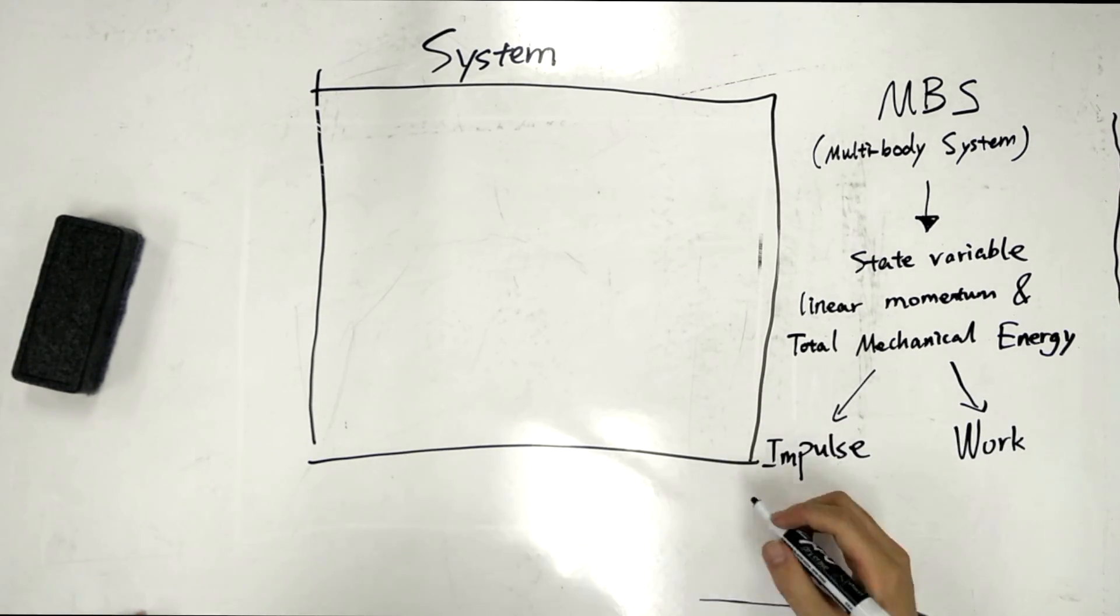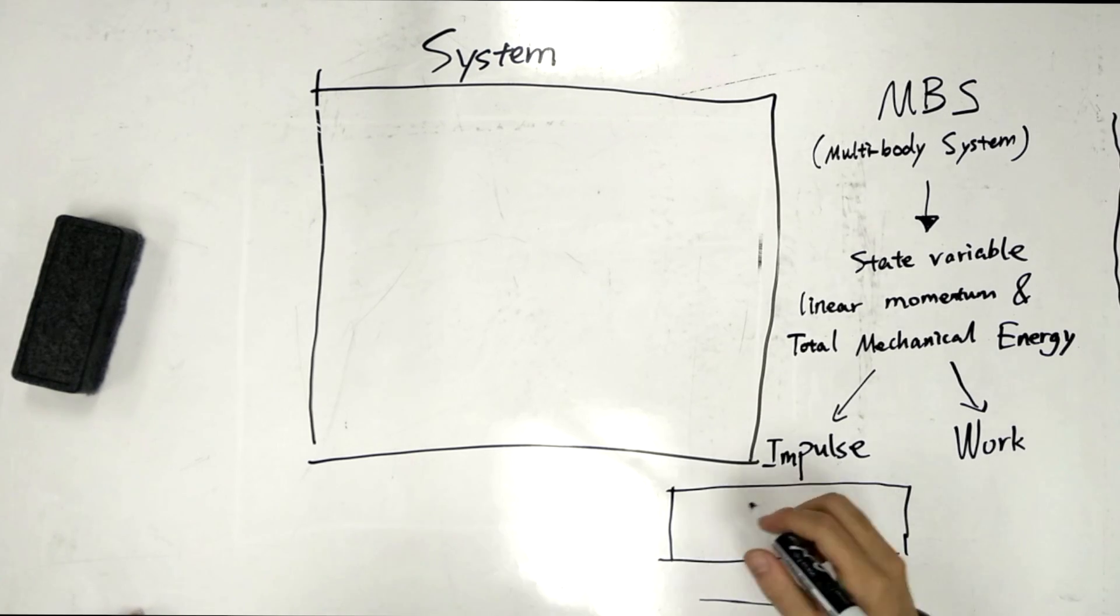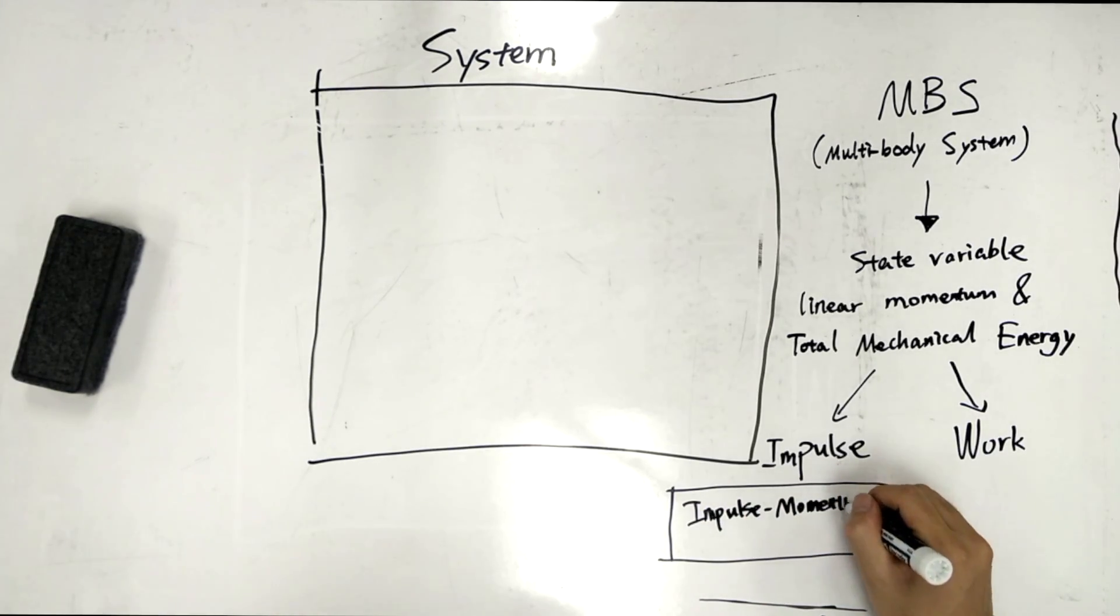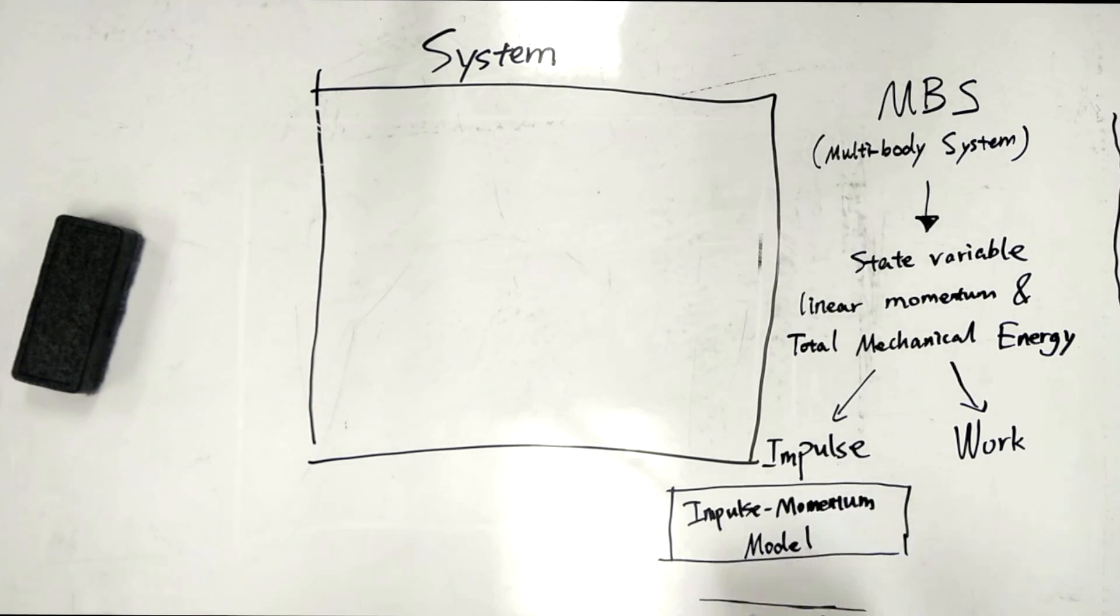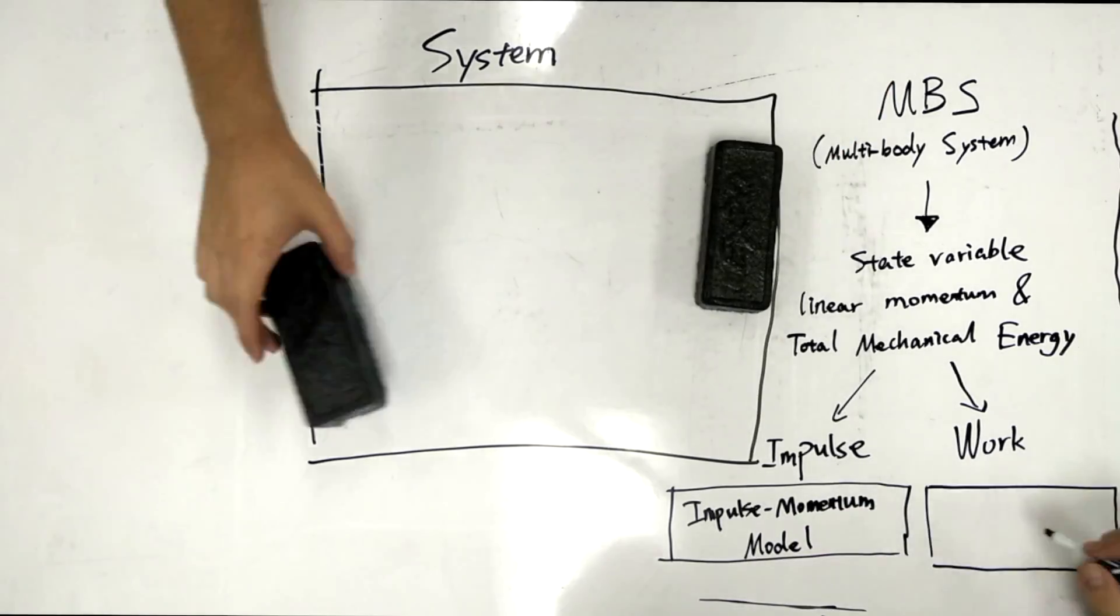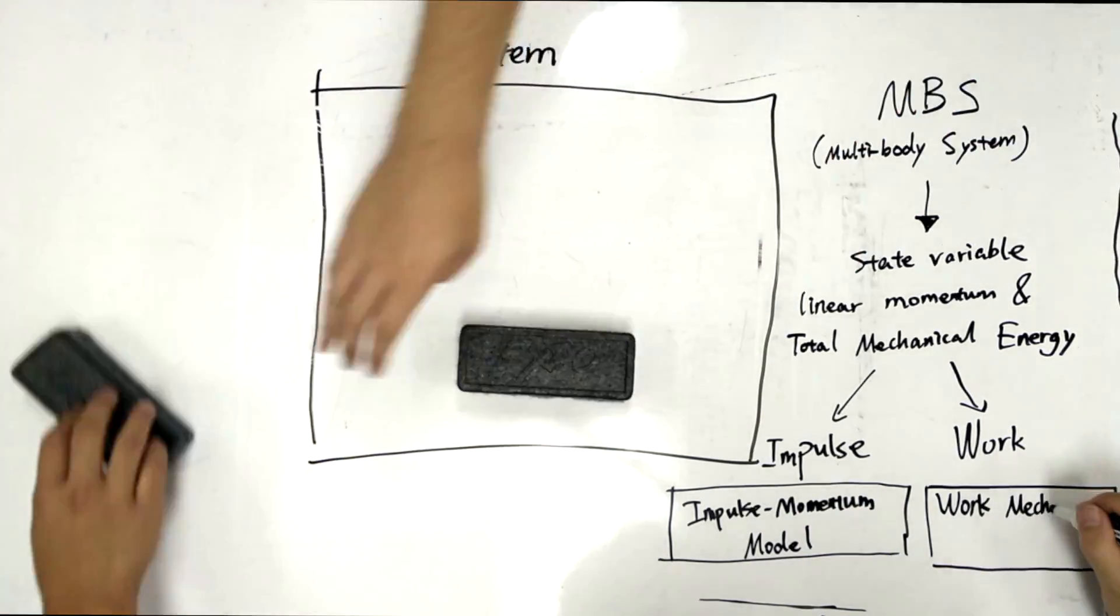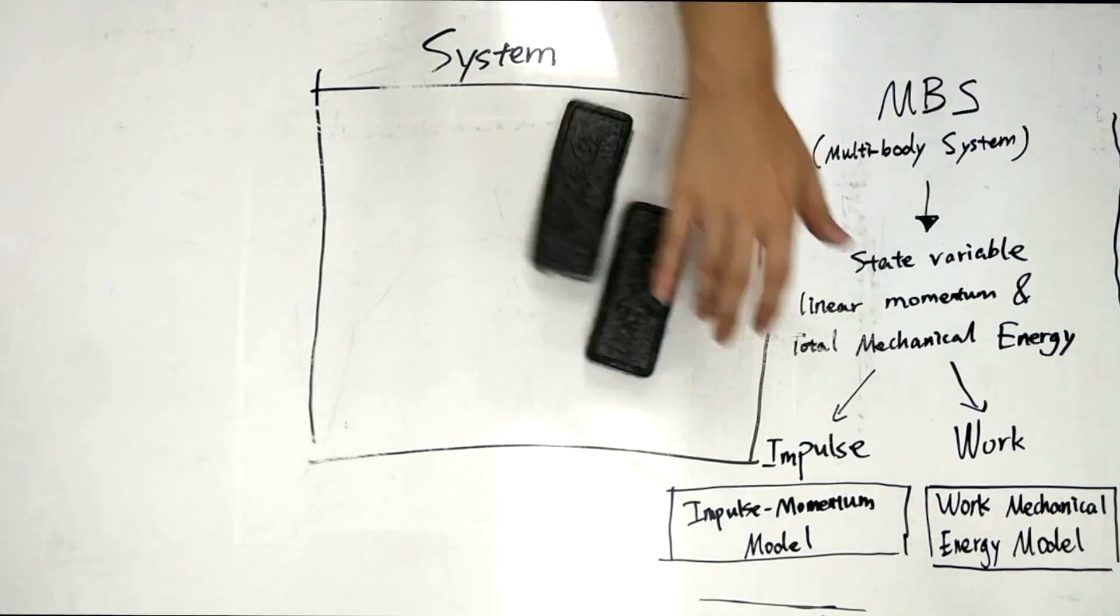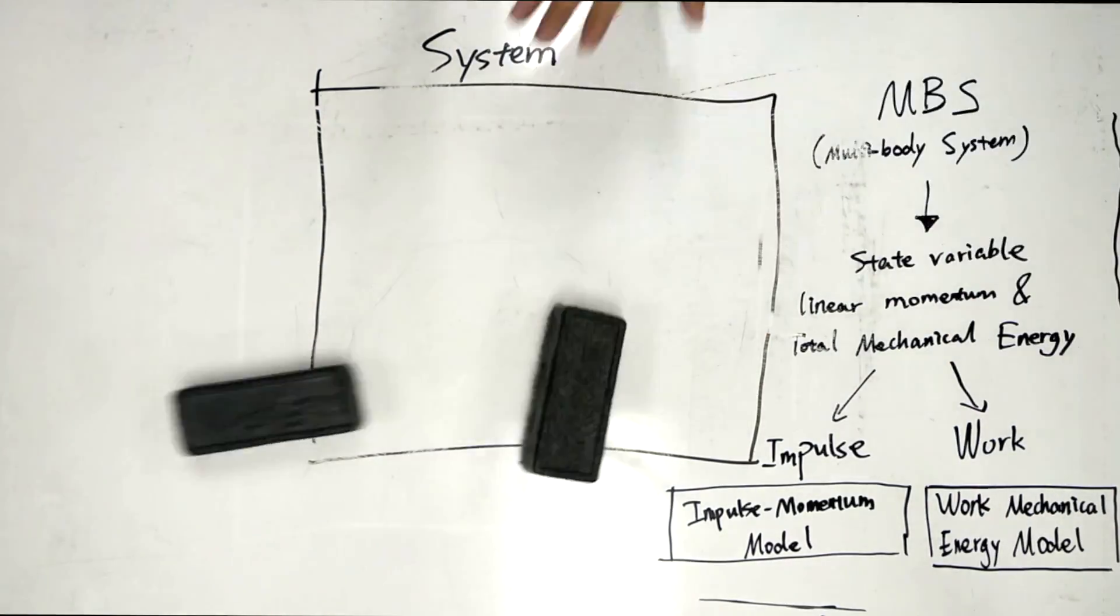We also have models to represent this. For impulse, we have the impulse momentum model. And for work, we have the work mechanical energy model. And as you can see, this is essentially two objects translating energy between each other.